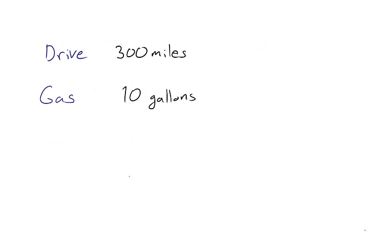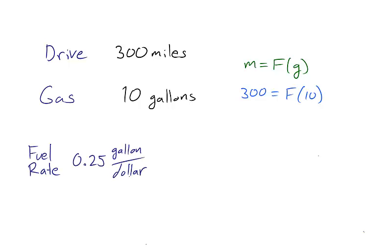Suppose I drive 300 miles on a 10 gallon tank. That is, 300 equals f of 10. And suppose where I happen to stop for gas was selling gas at $4 per gallon or 0.25 gallons per dollar. That is, I spent $40, or 10 equals h of 40.